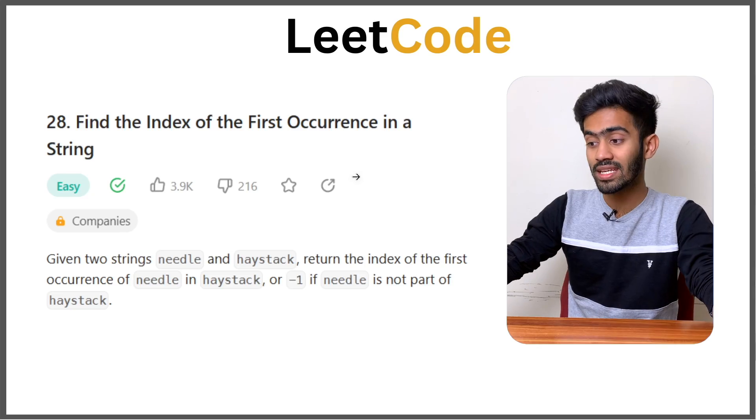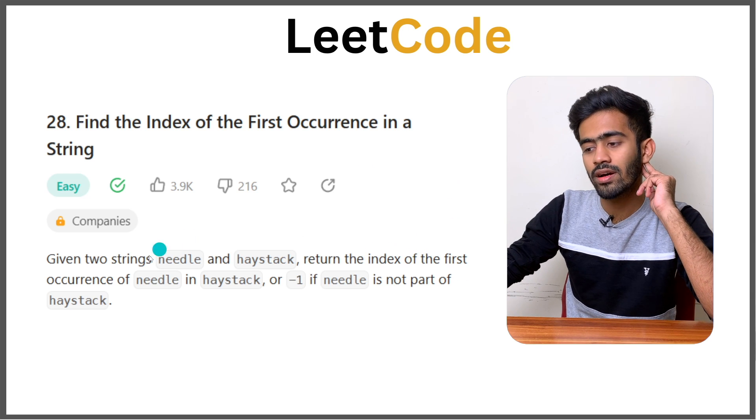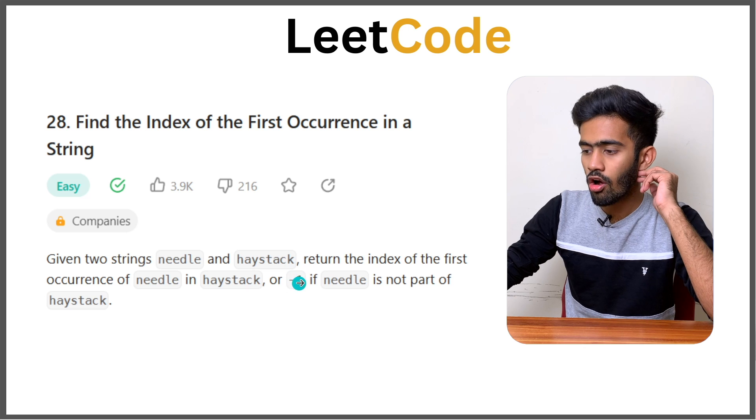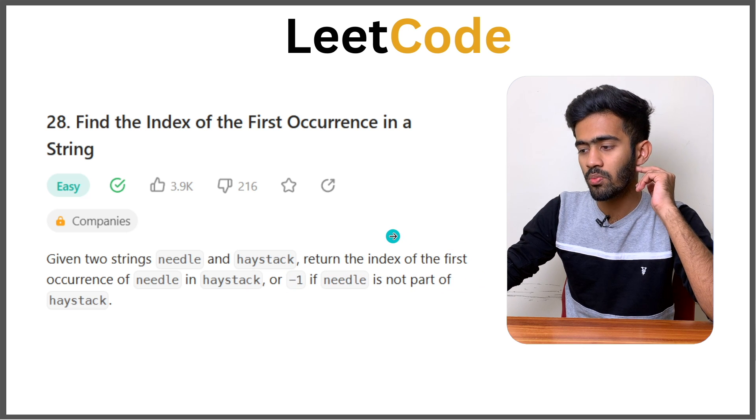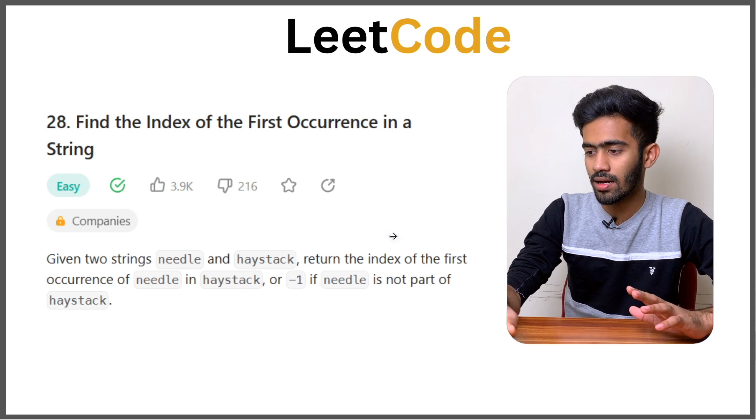Hi, welcome to Kadaivo. In this episode of the LeetCode series, let's talk about the question: find the index of the first occurrence in a string. First, I'll state the question, then give an example, develop an algorithm, and then solve it. Given two strings, needle and haystack, return the index of the first occurrence of needle in haystack, or minus one if the needle is not part of the haystack.